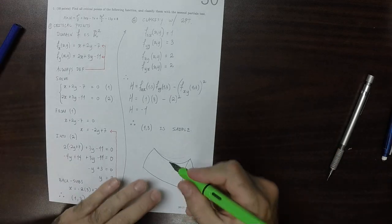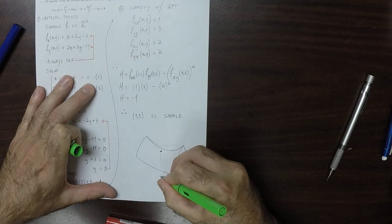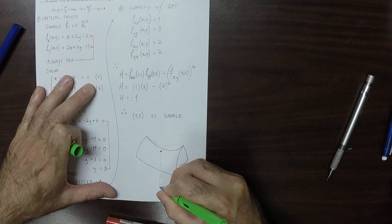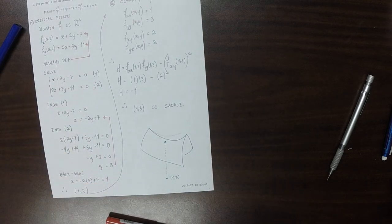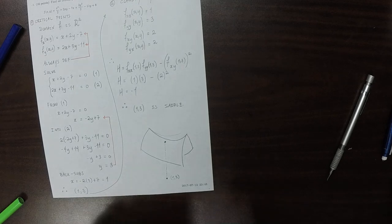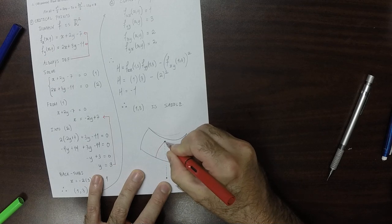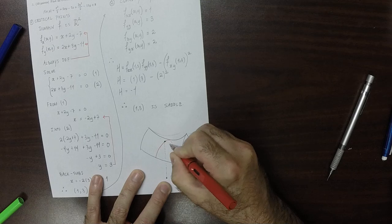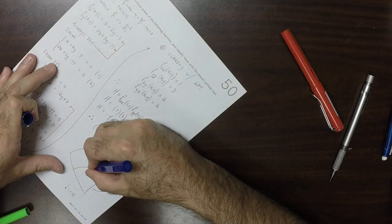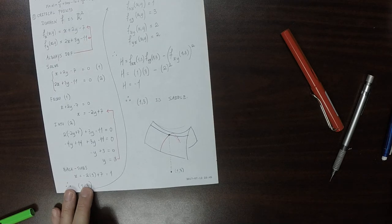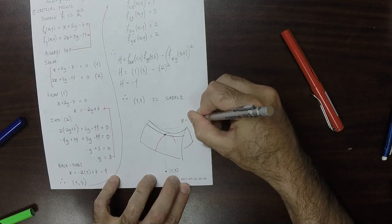At the point 1, 3 in the plane, the point 1, 3 maps to a saddle on the surface. So this is the surface, z is f of x and y.